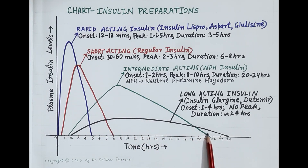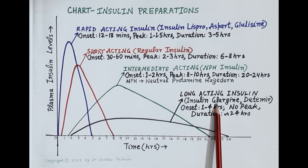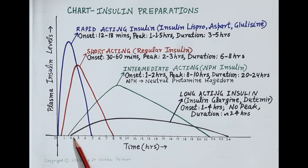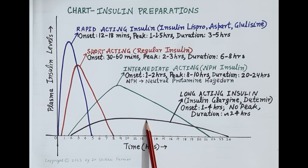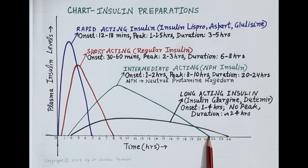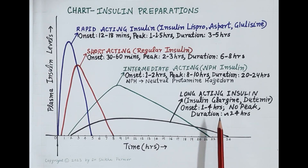The black color graph is for long acting insulin preparations — insulin Glargine and insulin Detemir — which are insulin analogues. These are absorbed slowly with an onset within 1 to 4 hours. No peak is observed, and they produce consistent lowering of blood glucose levels throughout 24 hours. They are usually administered once daily and control blood glucose during fasting — between meals and overnight.